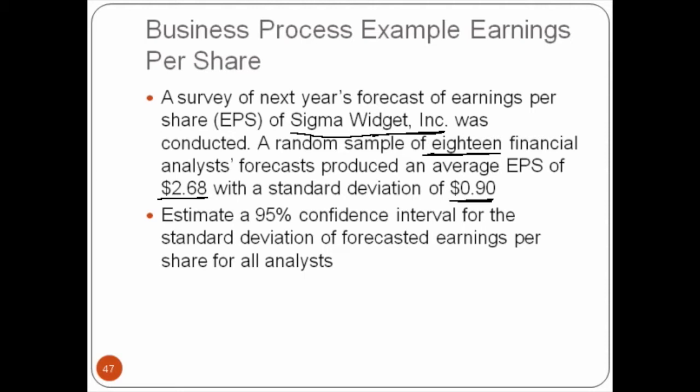They feel that this company is going to earn about $2.68 per share. It is very important because if the company beats the estimate in their quarter, it is a very positive sign. Shareholders want to buy such company shares so they can profit in future. The question asks to estimate a 95% confidence interval for standard deviation of forecasted earnings per share. Standard deviation of $0.90, that's what is given. We also are given 1 minus alpha, which is the confidence level.